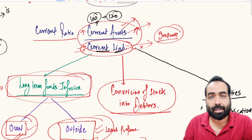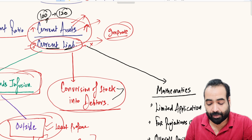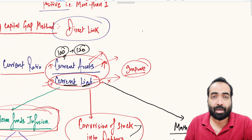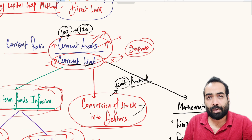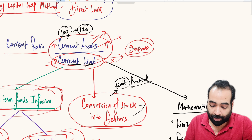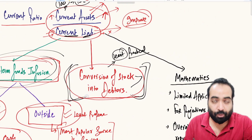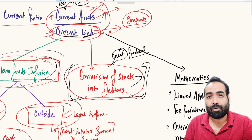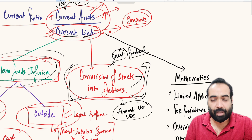Converting stock into debtors — that is, selling stock and keeping the receivable amount — can improve the current ratio. However, practically this method has very limited use when actually working on CMA data or making MPBF calculations. It is good for interviews if someone asks how to improve the current ratio, but in practice it is of almost no use.